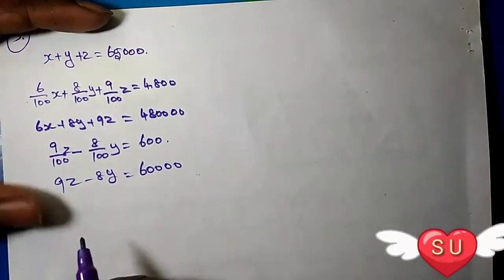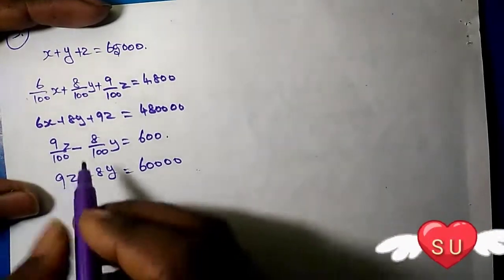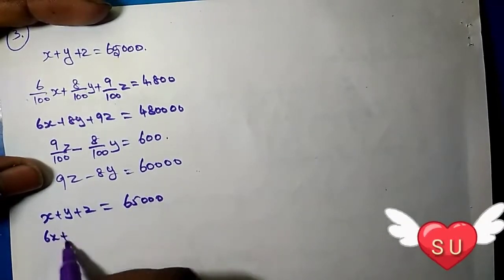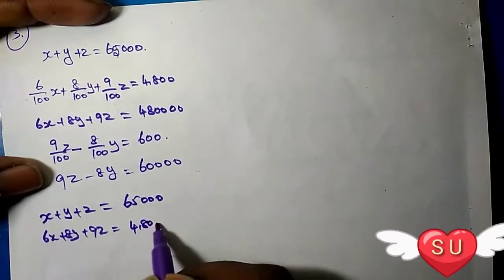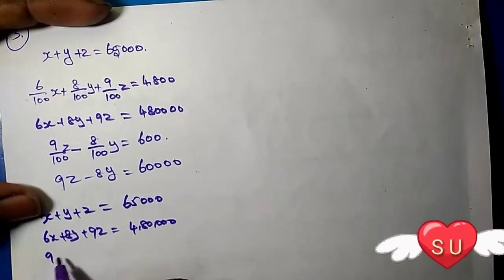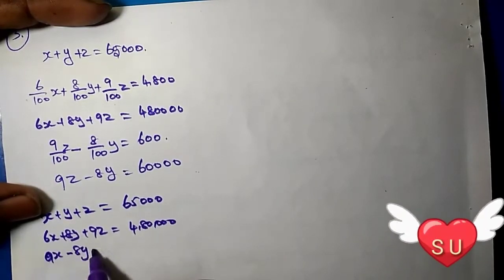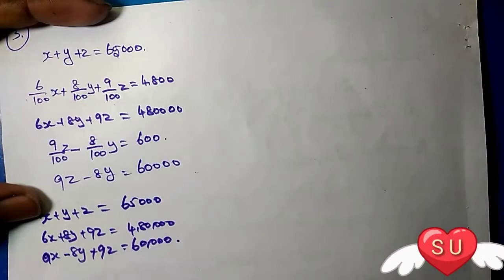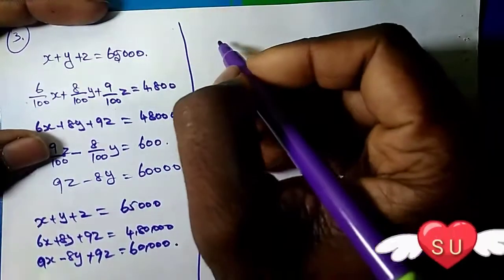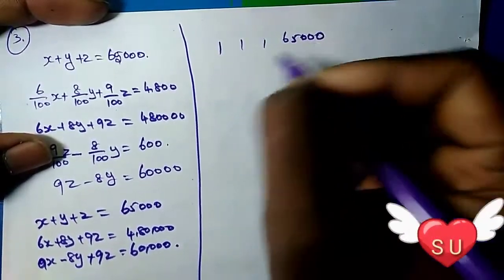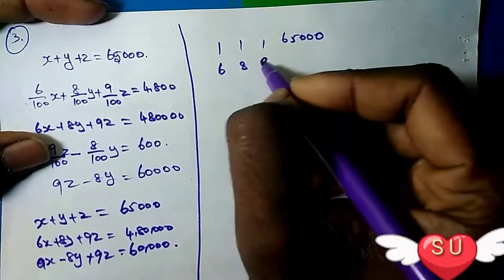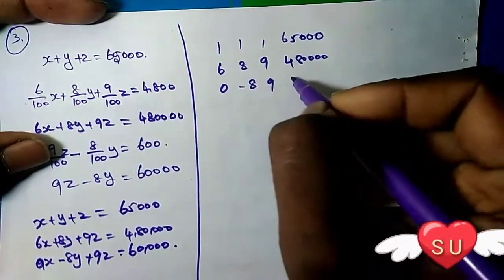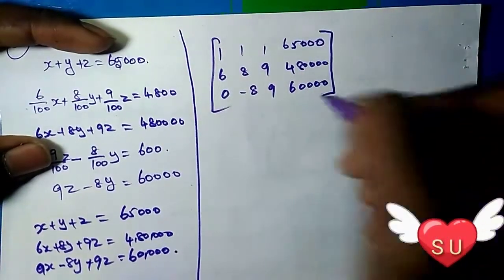So the equations are: first equation, X plus Y plus Z equals 65,000. Second equation, 6X plus 8Y plus 9Z equals 480,000. Third equation, 0X minus 8Y plus 9Z equals 60,000. Now we'll apply the elimination method.